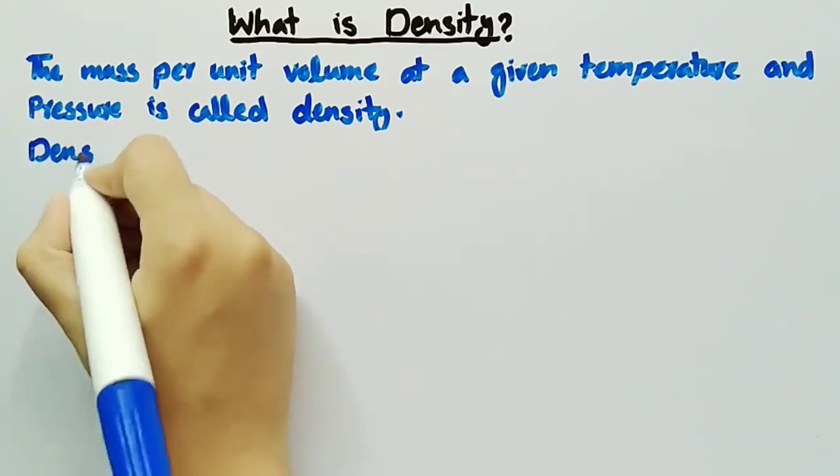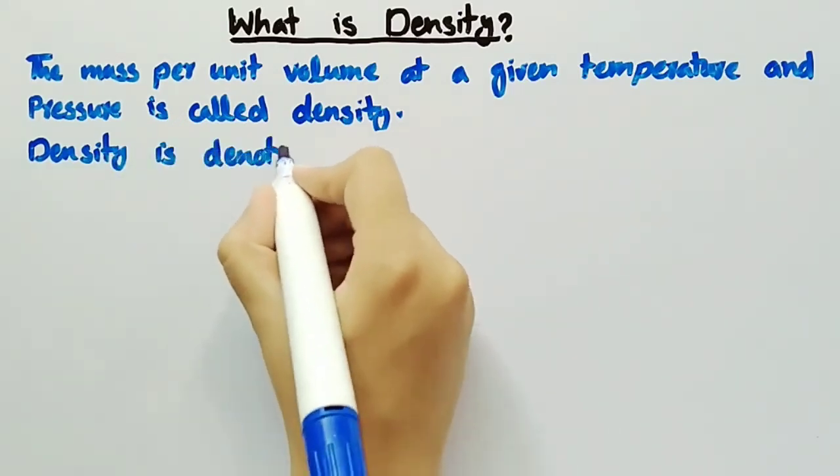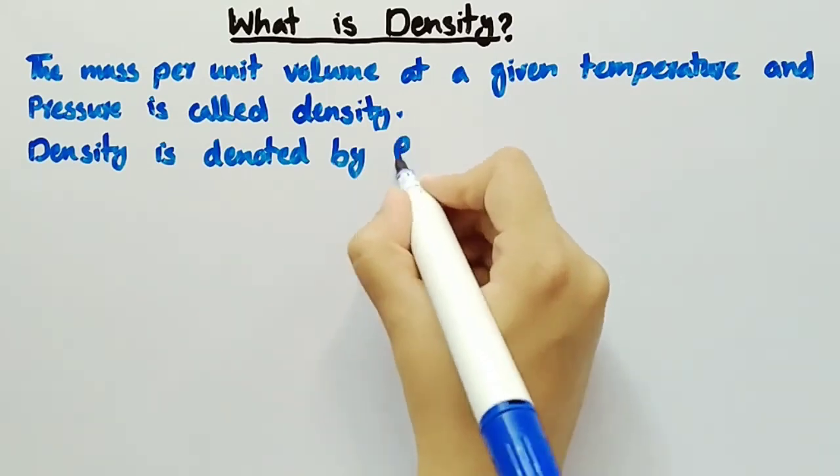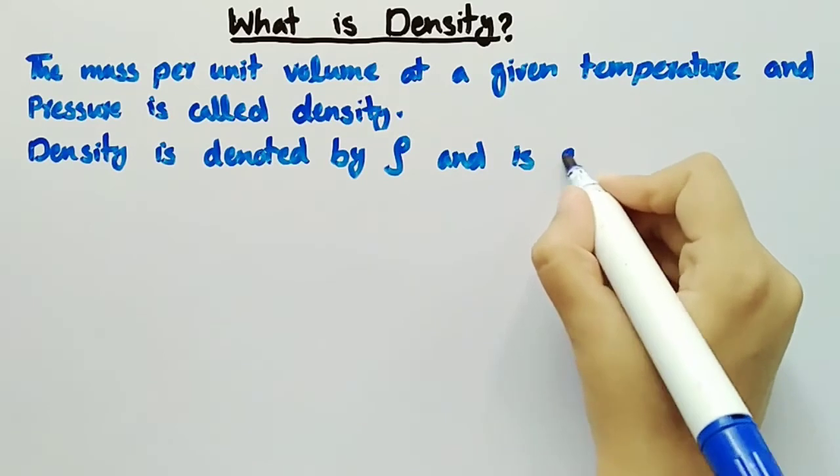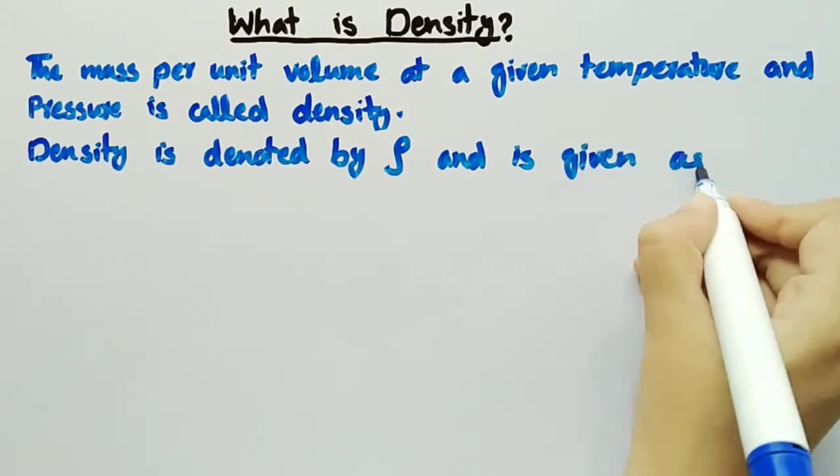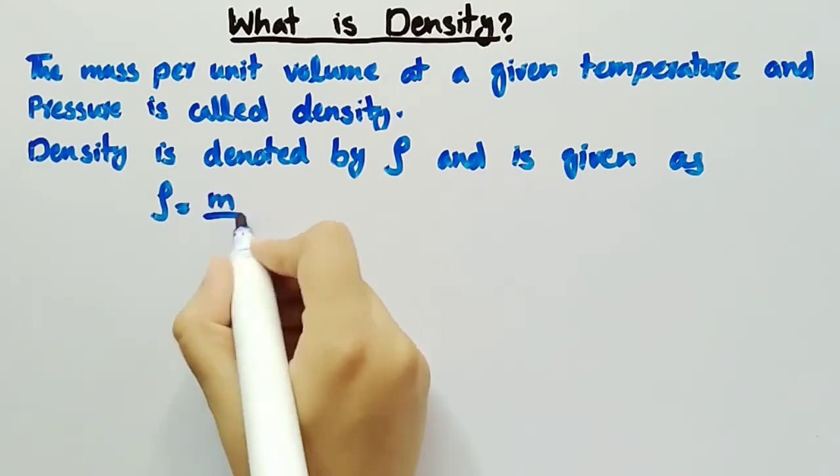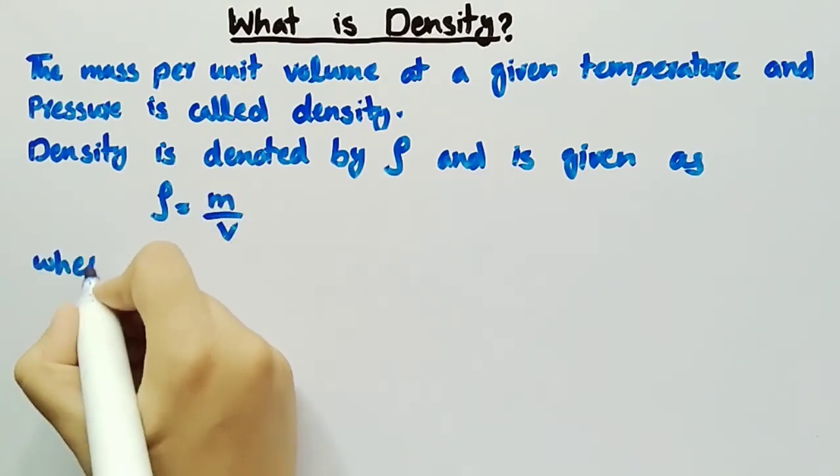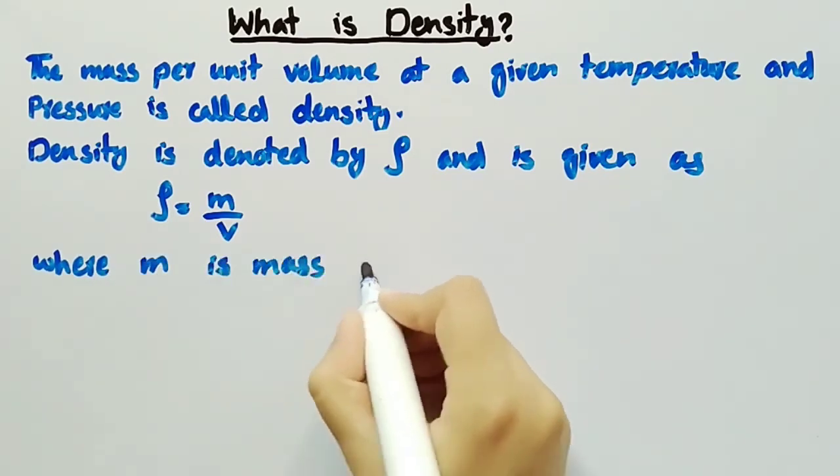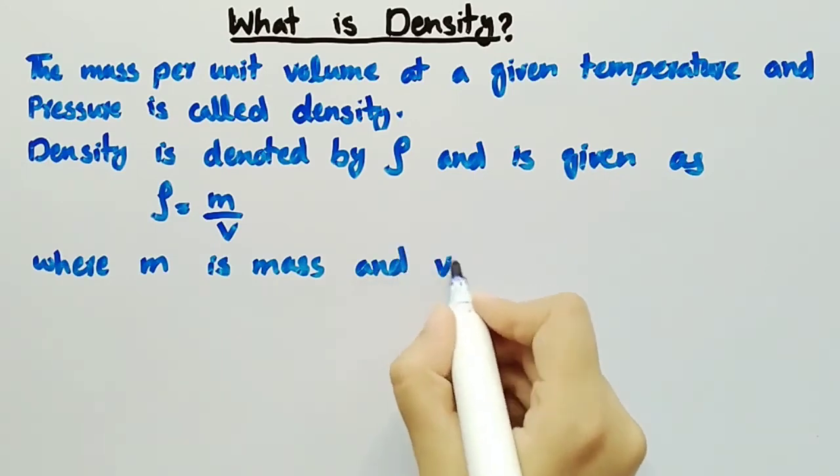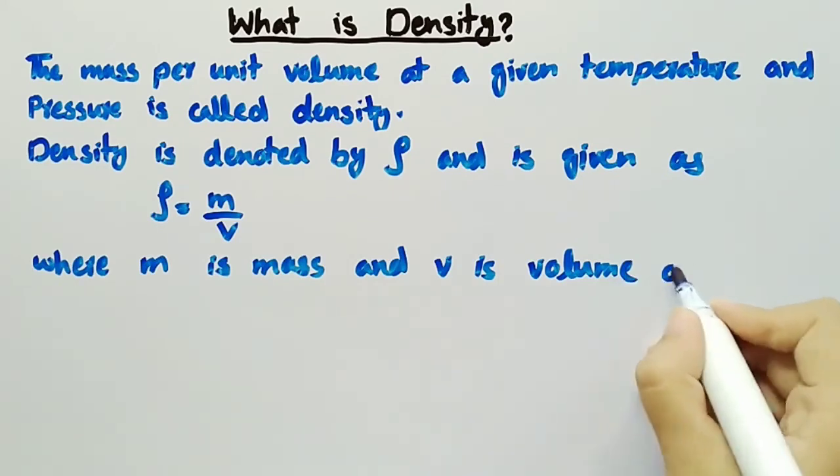Density is denoted by a symbol rho and is given as rho equals m by v, where m is mass and v is volume of substance.